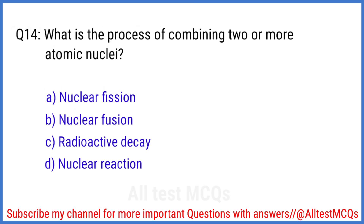Q14. What is the process of combining two or more atomic nuclei? The right answer is option B. Nuclear fusion.